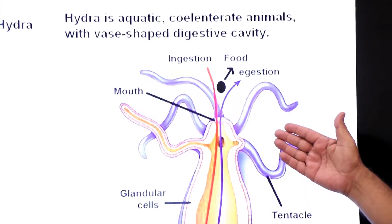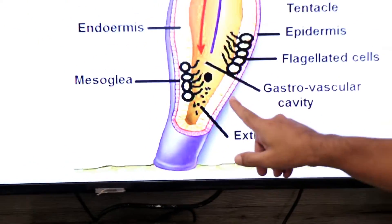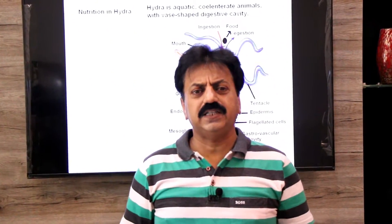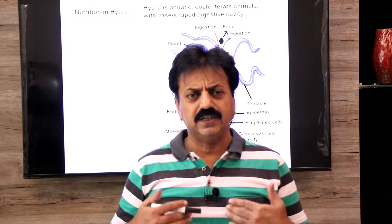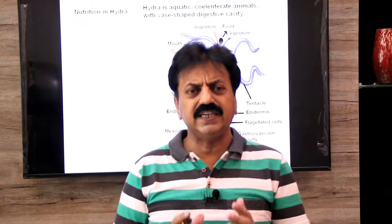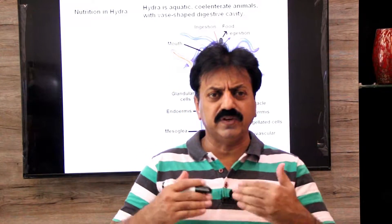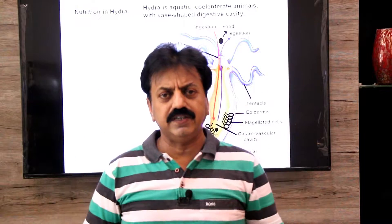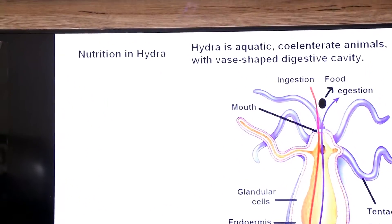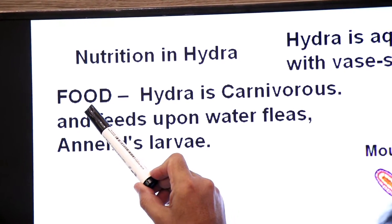This diagram shows the vase-shaped gastrovascular cavity of Hydra. The gastrovascular cavity is special because it not only digests food but also distributes it. Flagellated cells move and help circulate the digested food within this cavity.